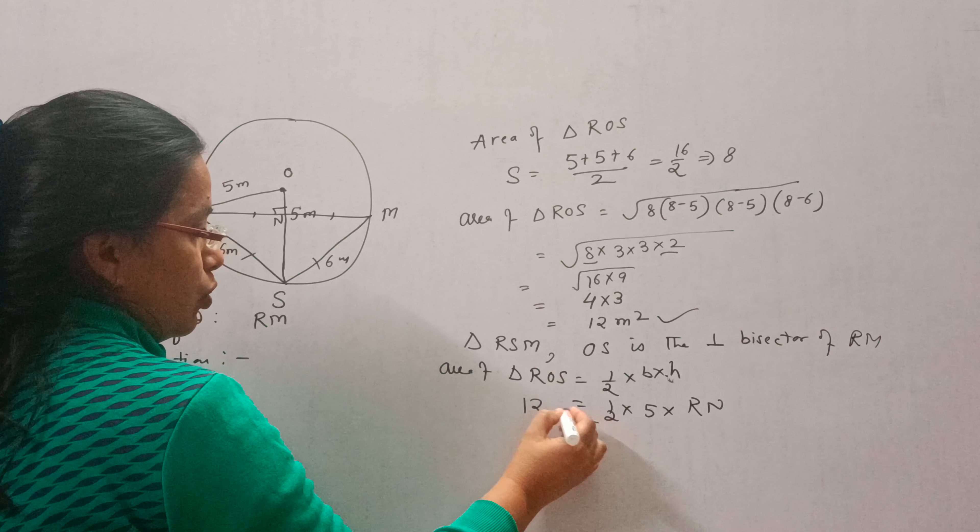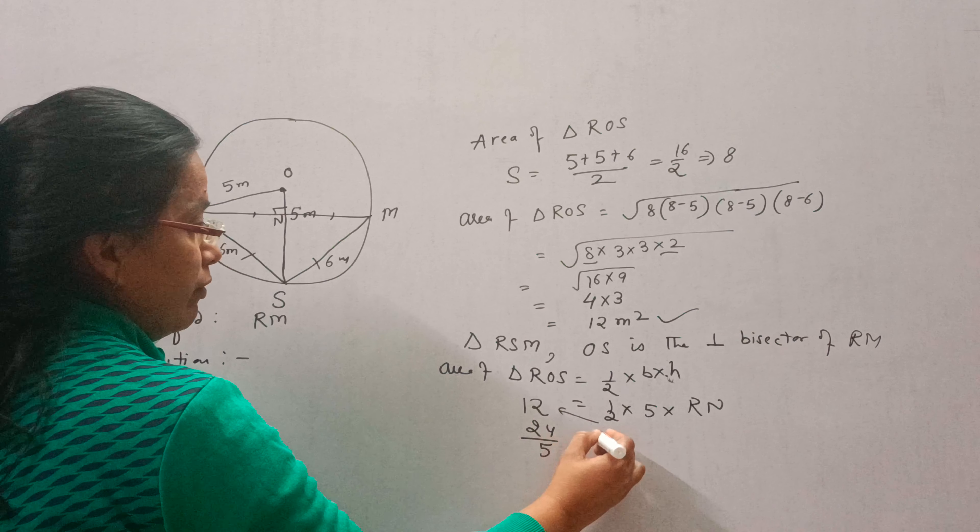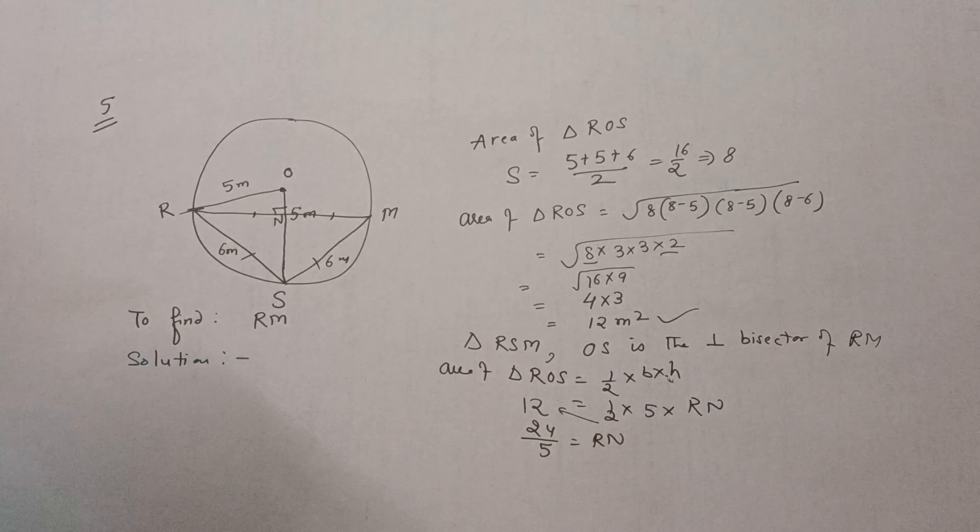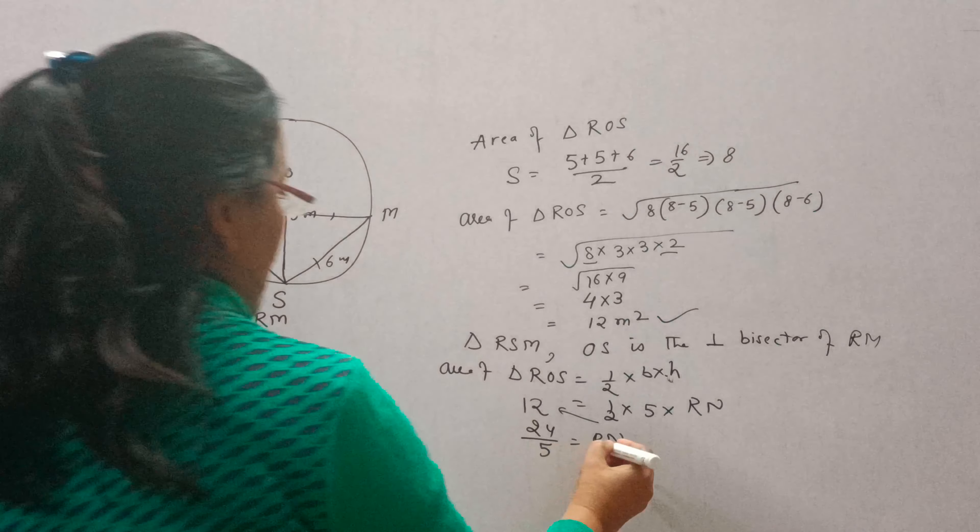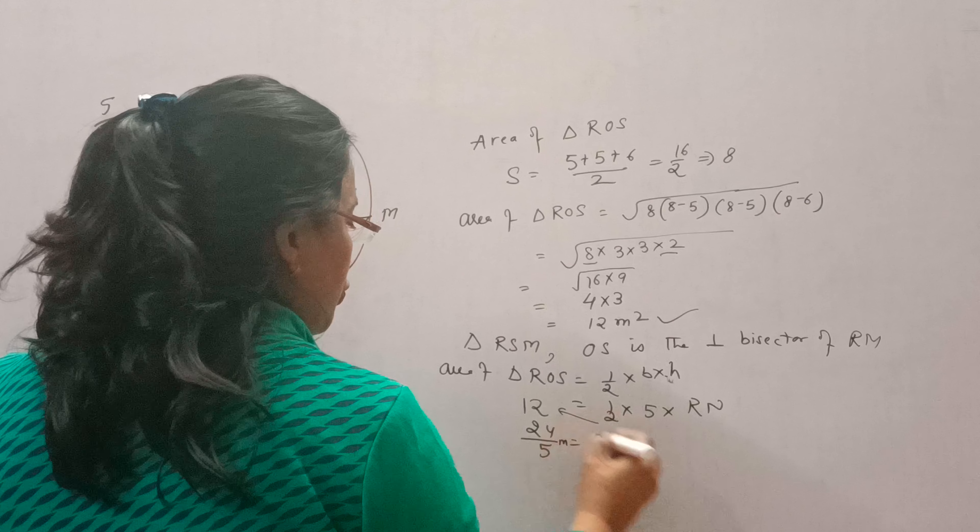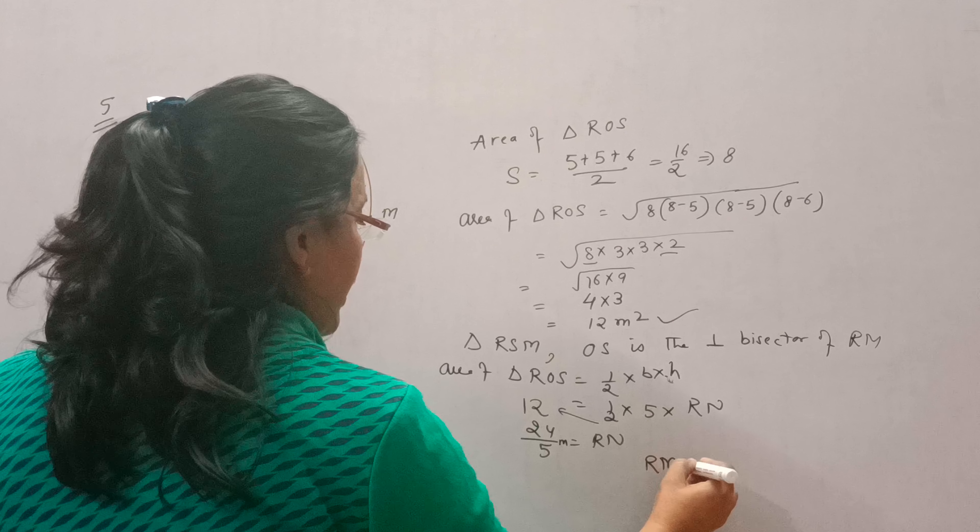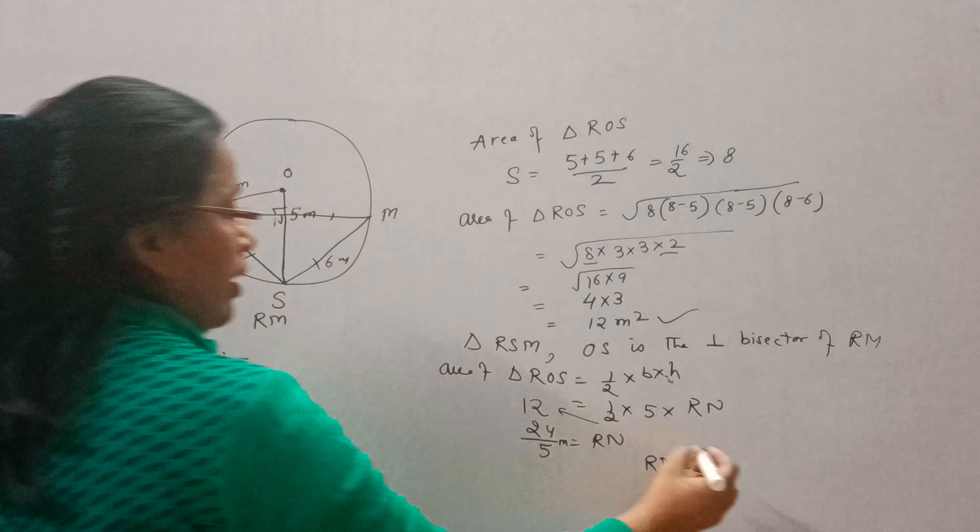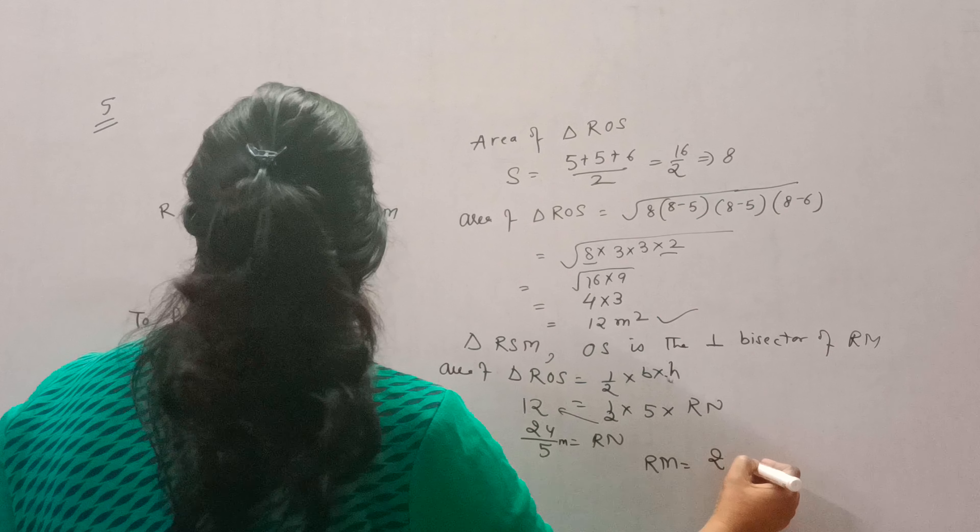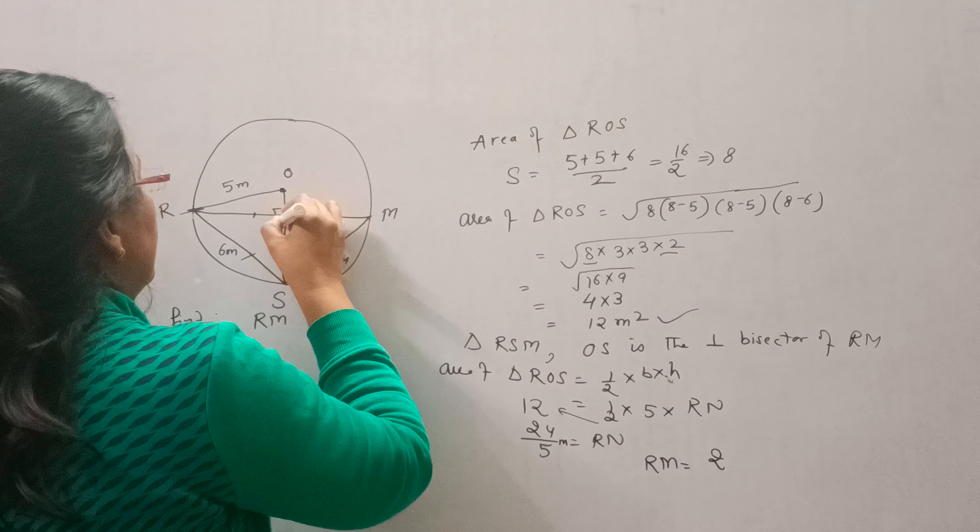So this will be 24 upon 5. This is RN. But we want RM. So if RN is 24 by 5, then RM will be double because RN is equal to NM.